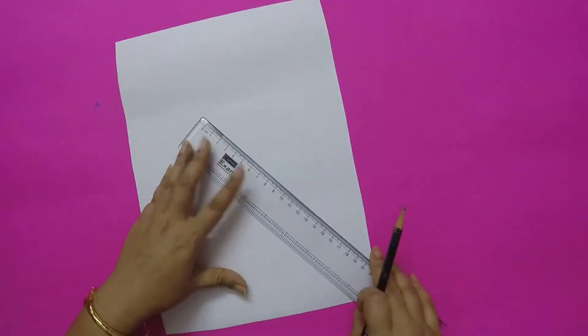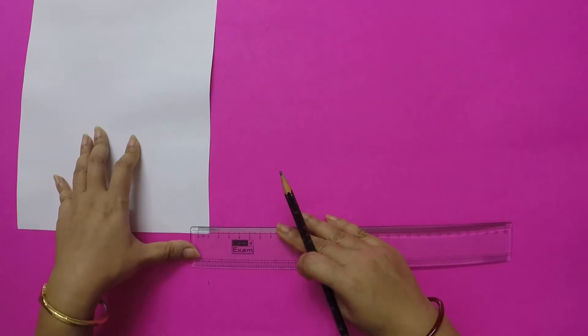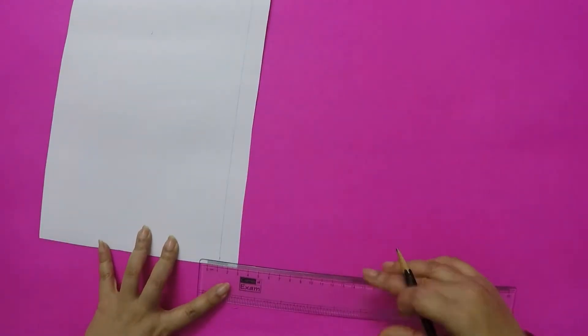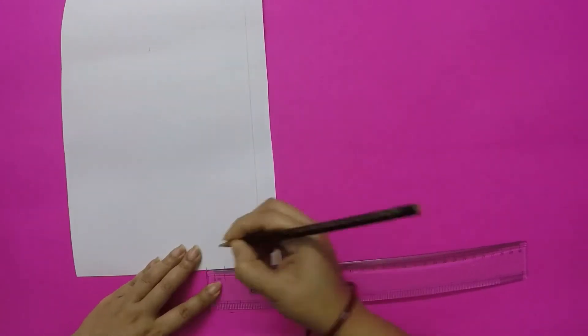First, take A4 size white chart paper and cut 6 strips. Each strip will be 1 cm thick.